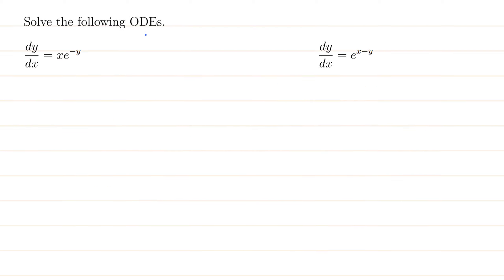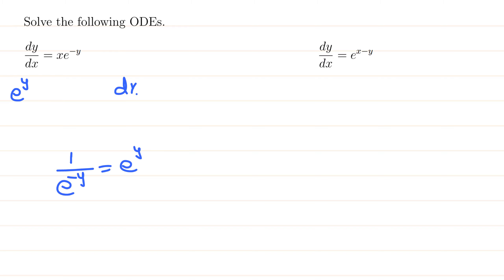Solve the following ordinary differential equations. We separate the variables because we have a product of x and a function of y on the right side. Divide both sides by e to the negative y — the 1 over e to the negative y on the left becomes e to the positive y. Move dx to the other side: e to the y dy equals x dx. Variables are now separated.